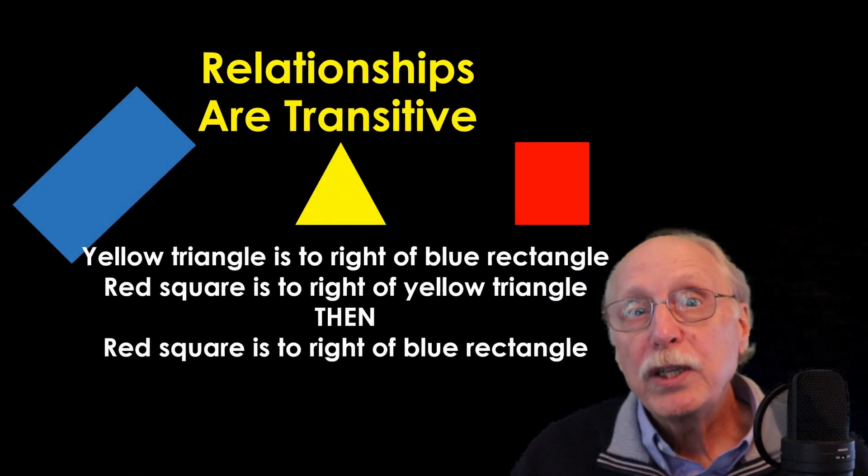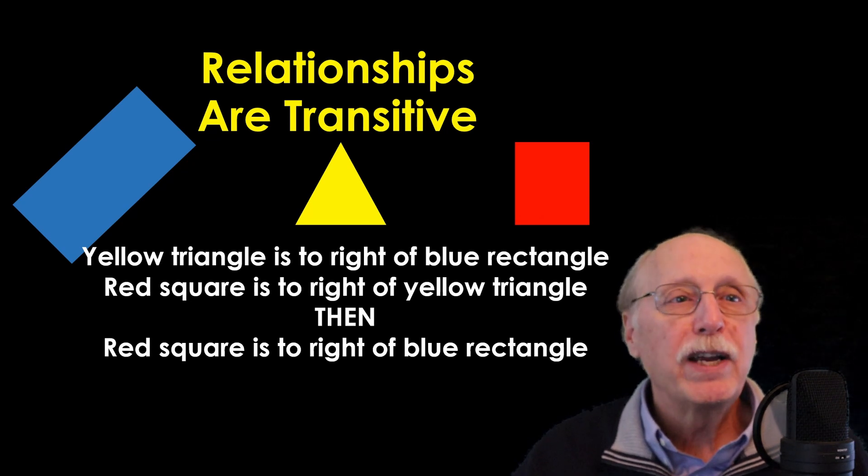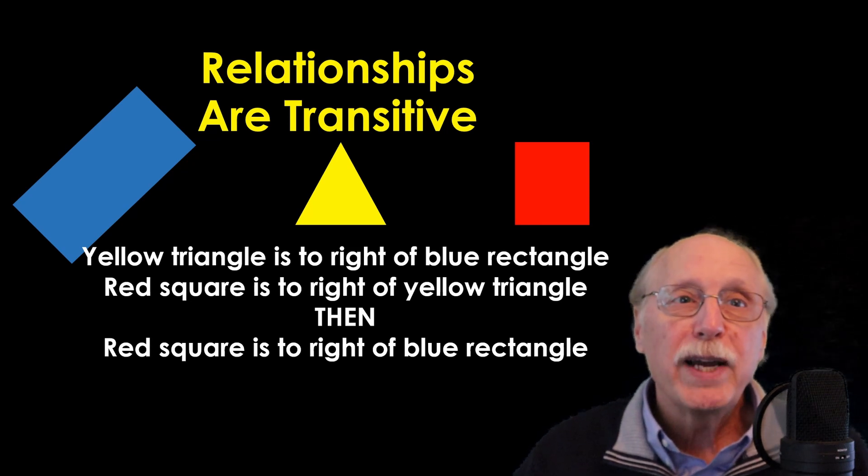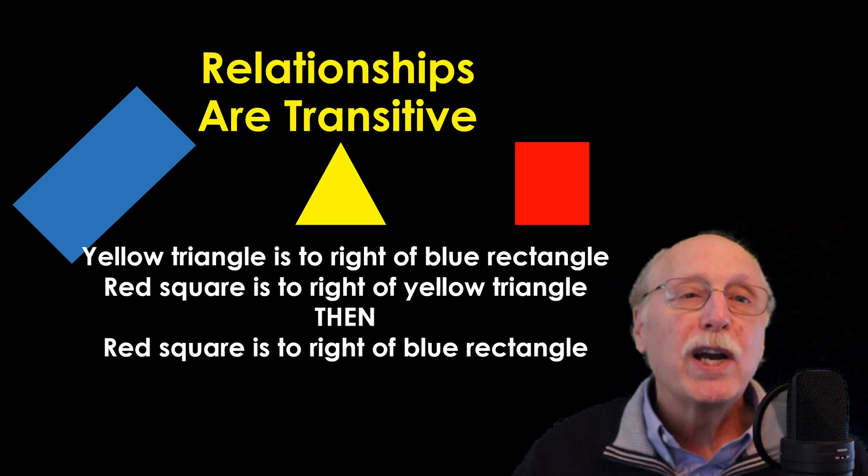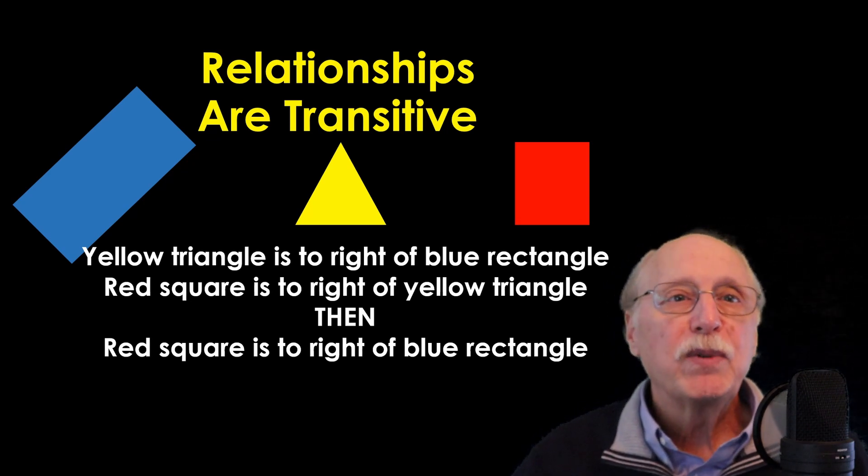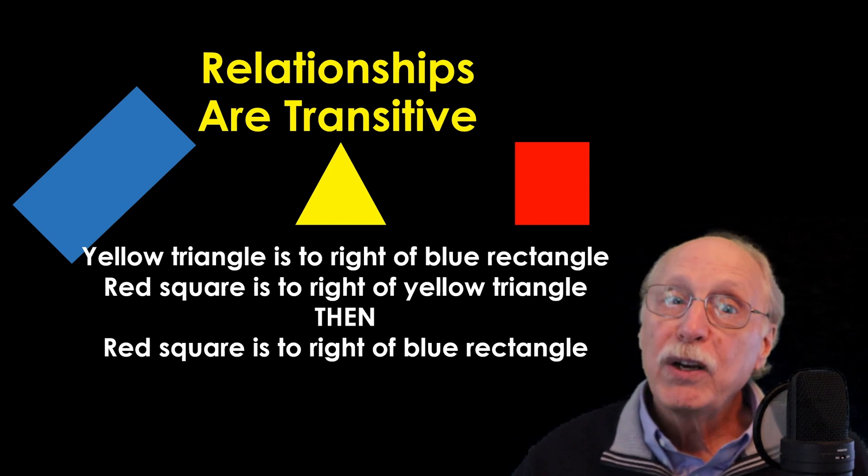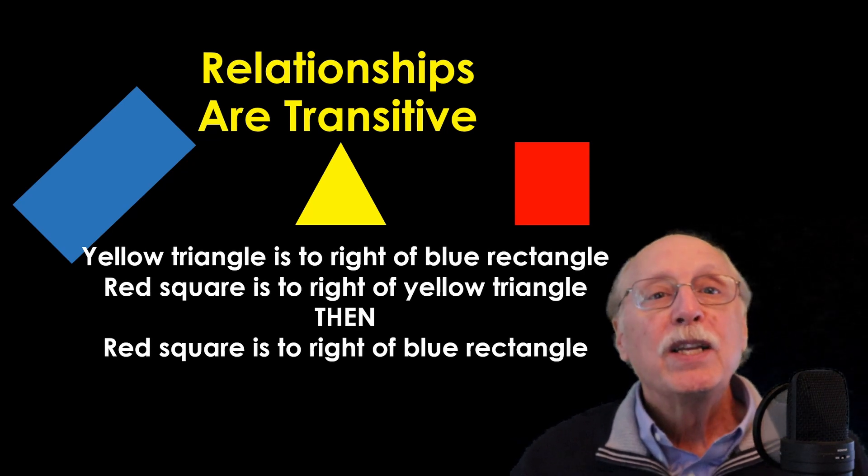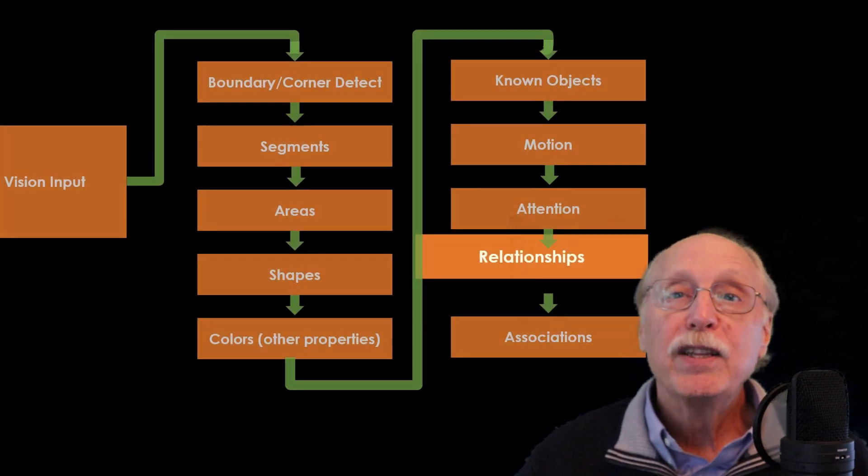Relationships are intrinsically transitive, so you know that if the yellow triangle is to the right of the blue rectangle, and the red square is to the right of the yellow triangle, then you immediately know that the red square is to the right of the blue rectangle. This is important because the system doesn't need to create relationships between all pairs of objects. By comparing only nearby objects, the system can use the transitive properties to know many more relationships than those explicitly added to the UKS.